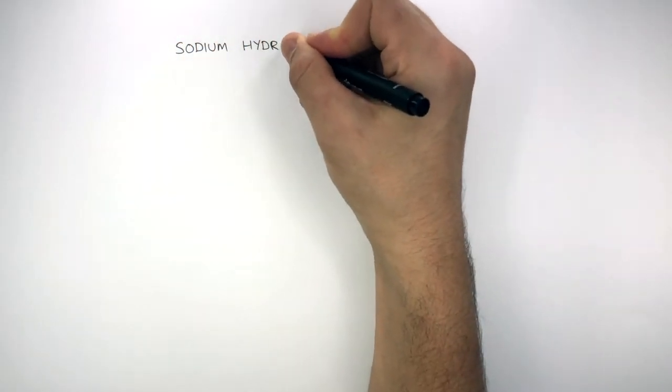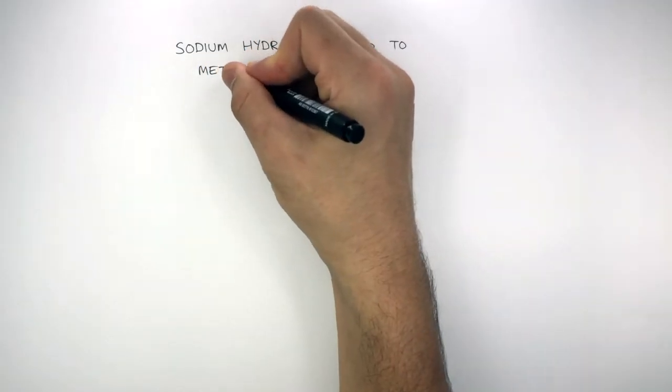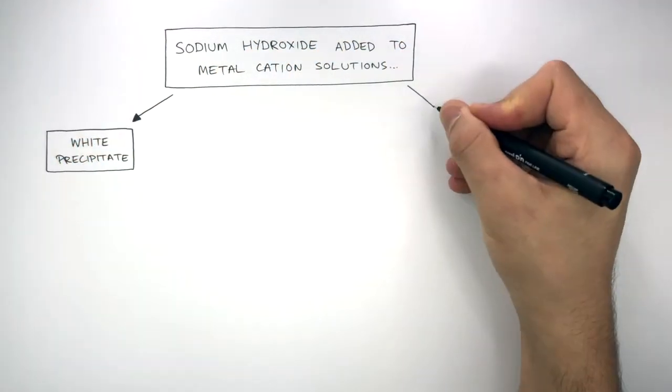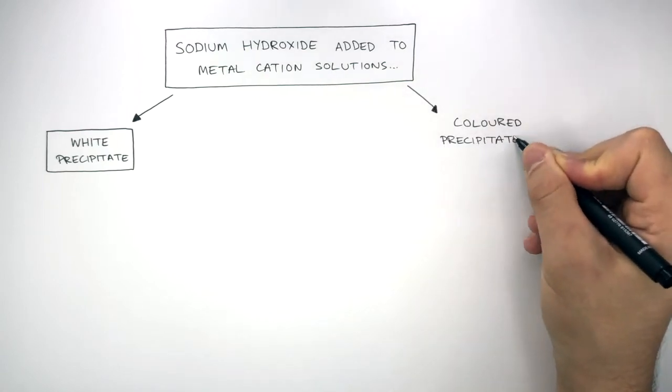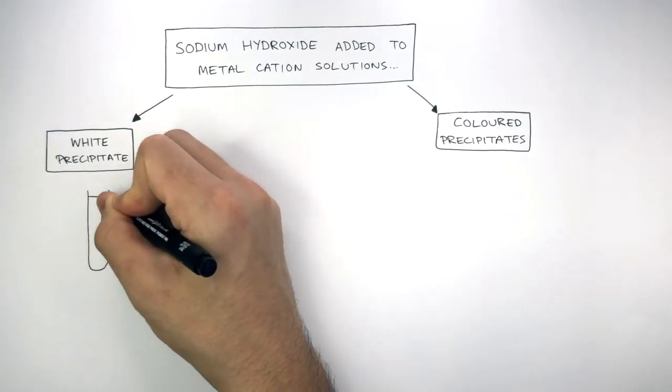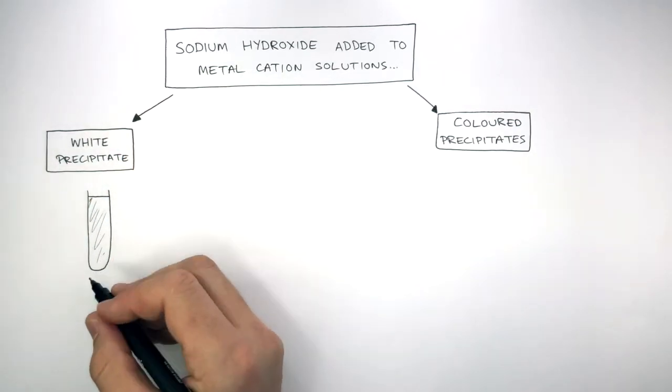When sodium hydroxide is added to metal cation solutions, either a white precipitate is formed or coloured precipitates are formed, and this depends on the metal cation. In this test tube where a white precipitate forms, this tells us